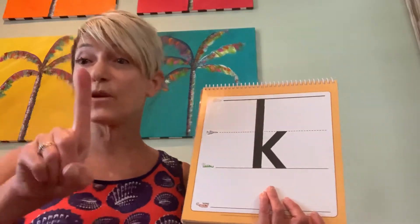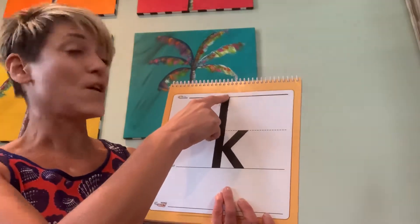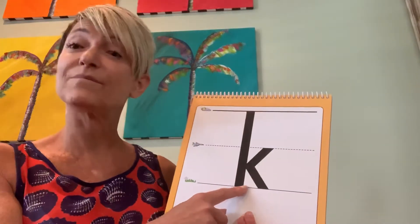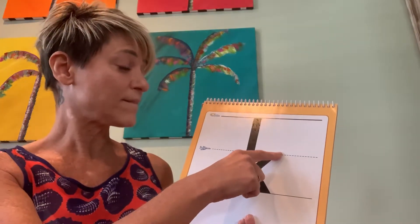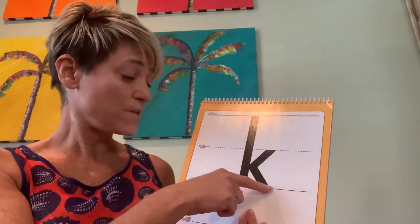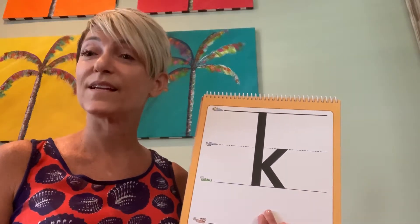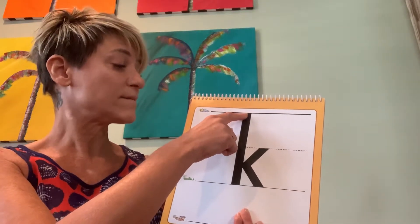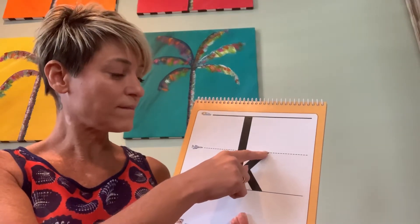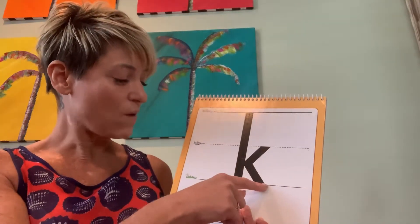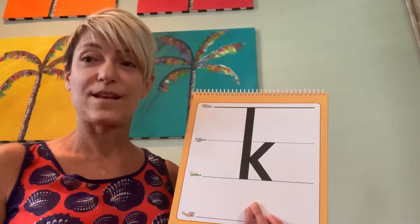Put your finger in the air. Start at the skyline, down to the grass line, go to the plain line, and in, and down to the grass line. K - kite - k. So K and C both make the same sound - k. They're different letters but they make the same sound, and when you put them together they also make the k sound.